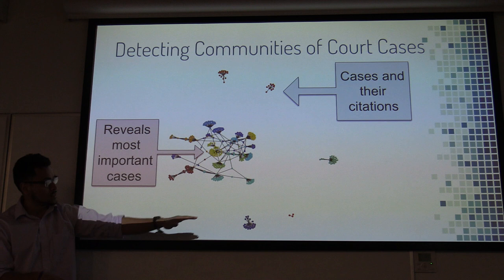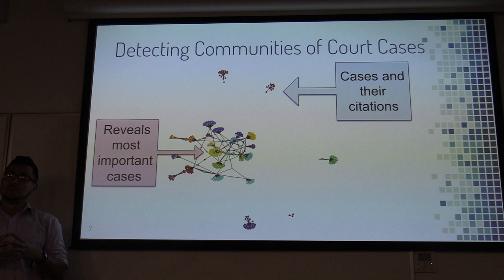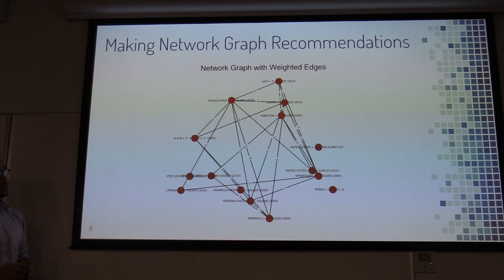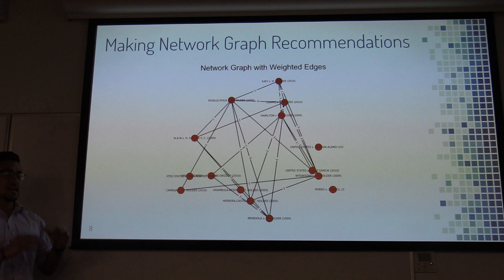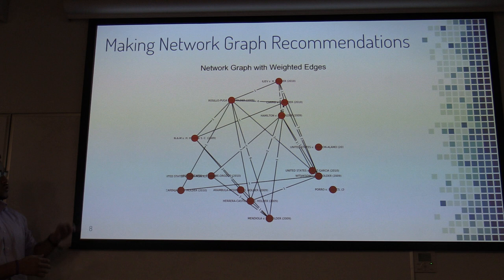This allows us to detect communities that are important. If you have a search, you can identify other cases that are very similar. The specific graph I used is called a network graph with weighted edges, where the edges or lines between court cases represent the number of citations those cases share. This is one of the tools I use to make a recommendation — if you click on a result and find it relevant, this is how the recommendation system works to surface similar cases.